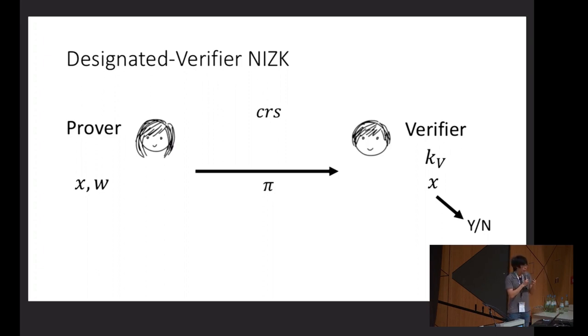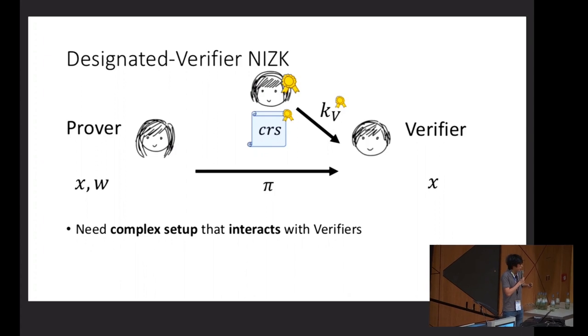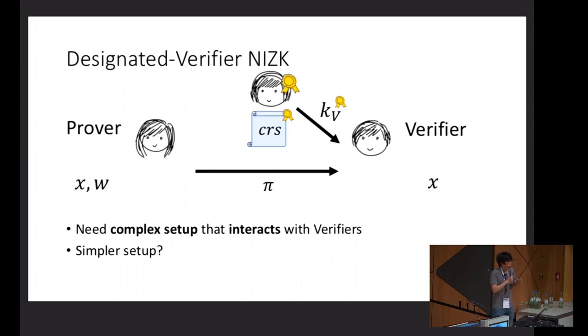What I'll be mainly interested in during this part is the setup assumption that we make. In particular, the setup assumption is that there is a magical entity that both publishes a CRS in the sky but also gives this secret key to the verifier. So the setup is kind of complex in the sense that the trusted party has to interact with every verifier that participates in the protocol. A natural question is to relax this trusted assumption and have something much simpler.